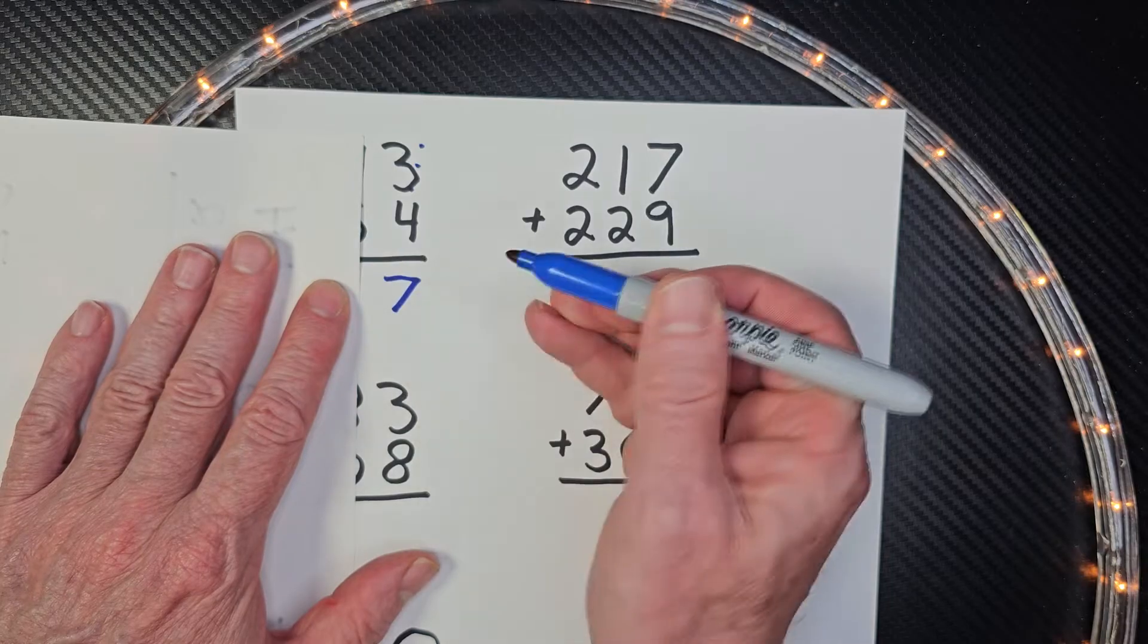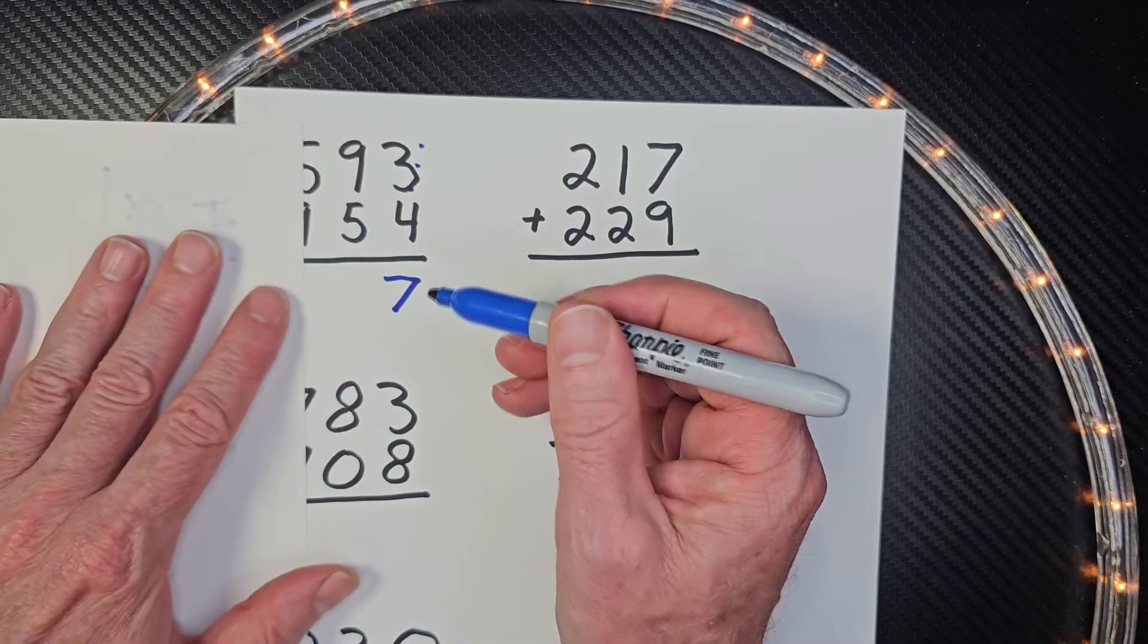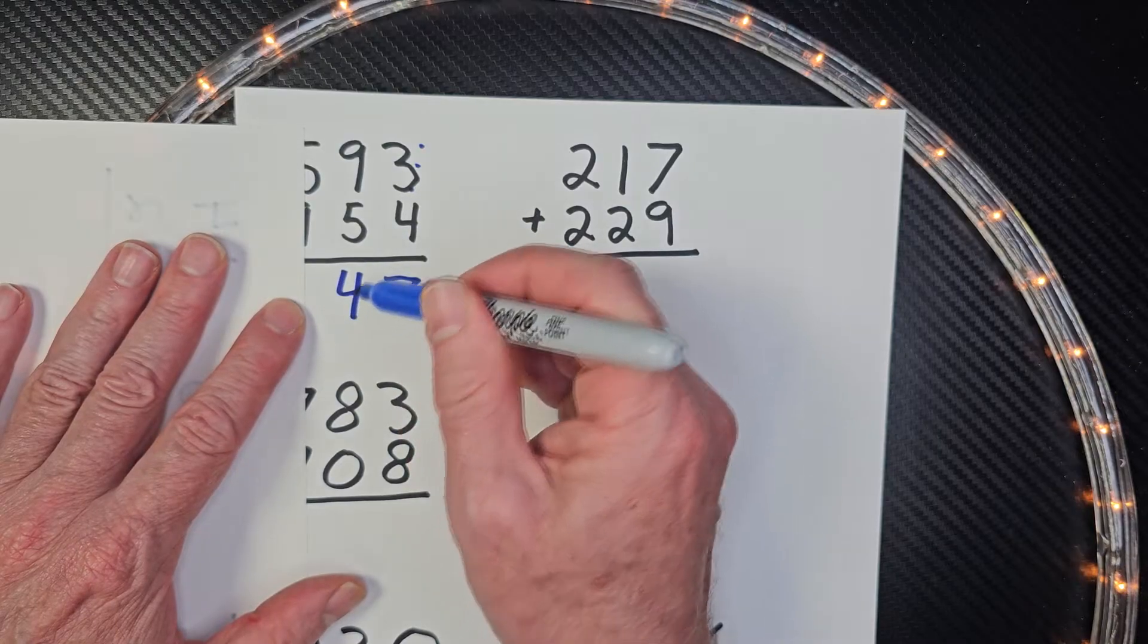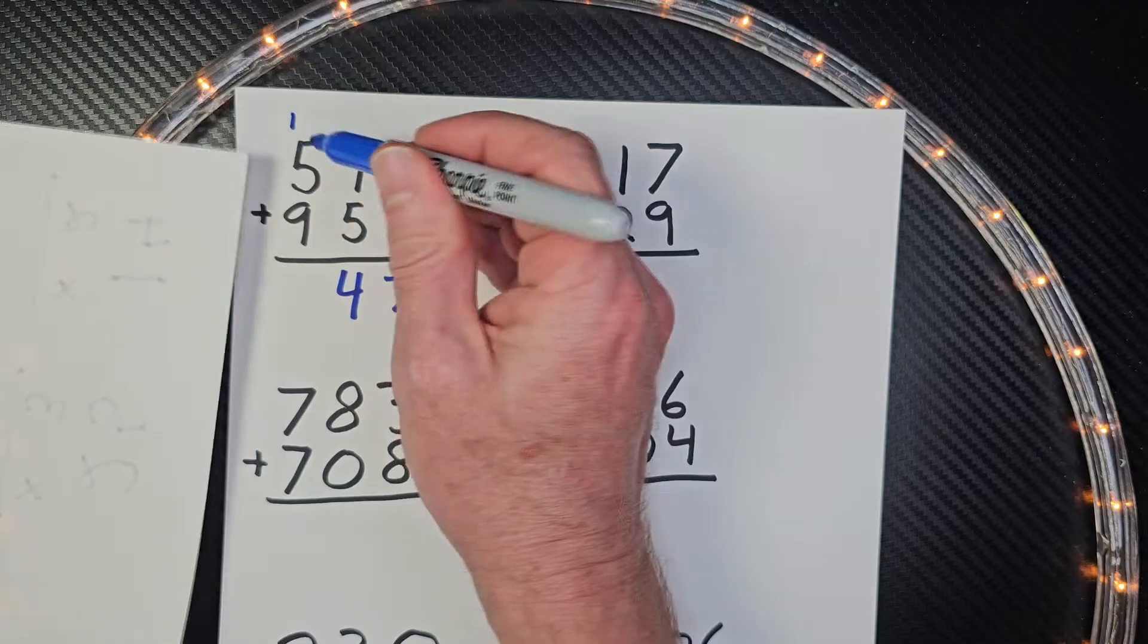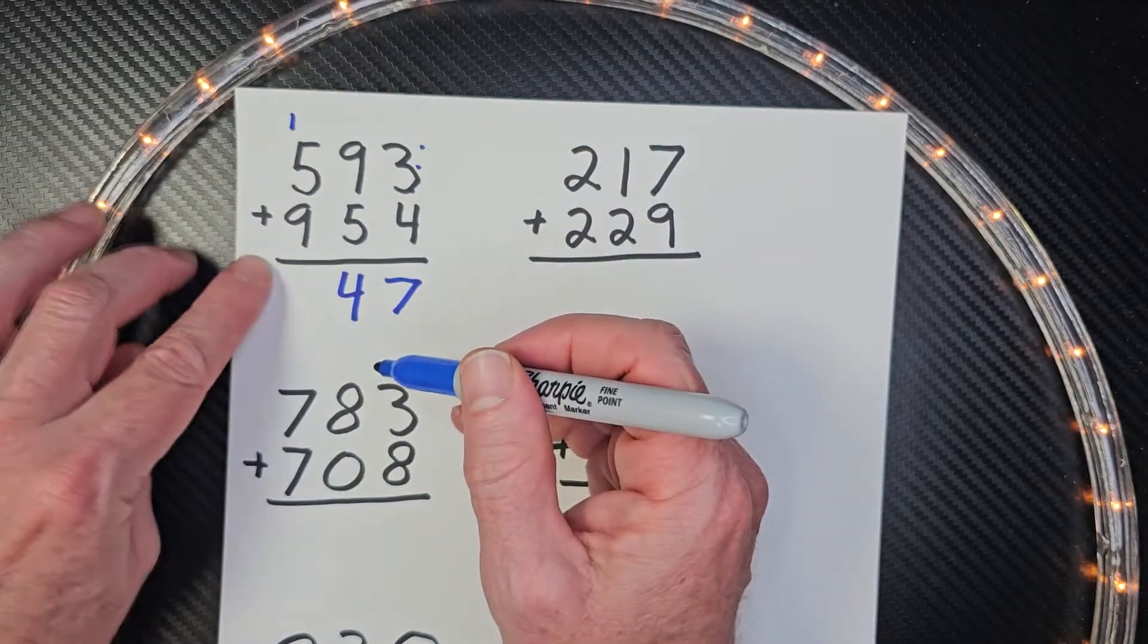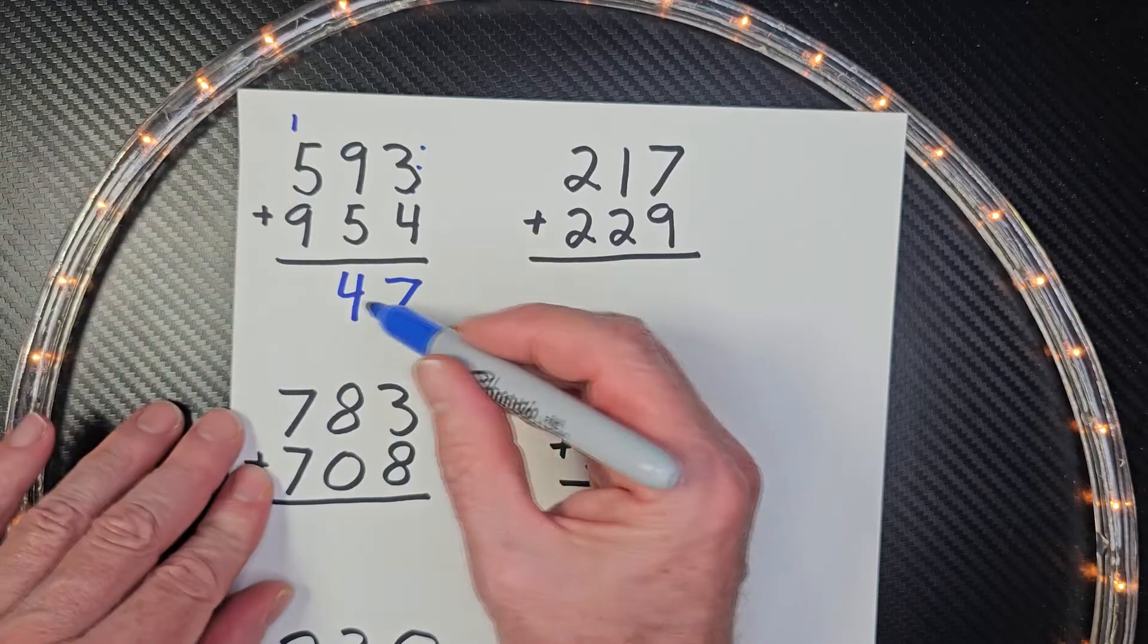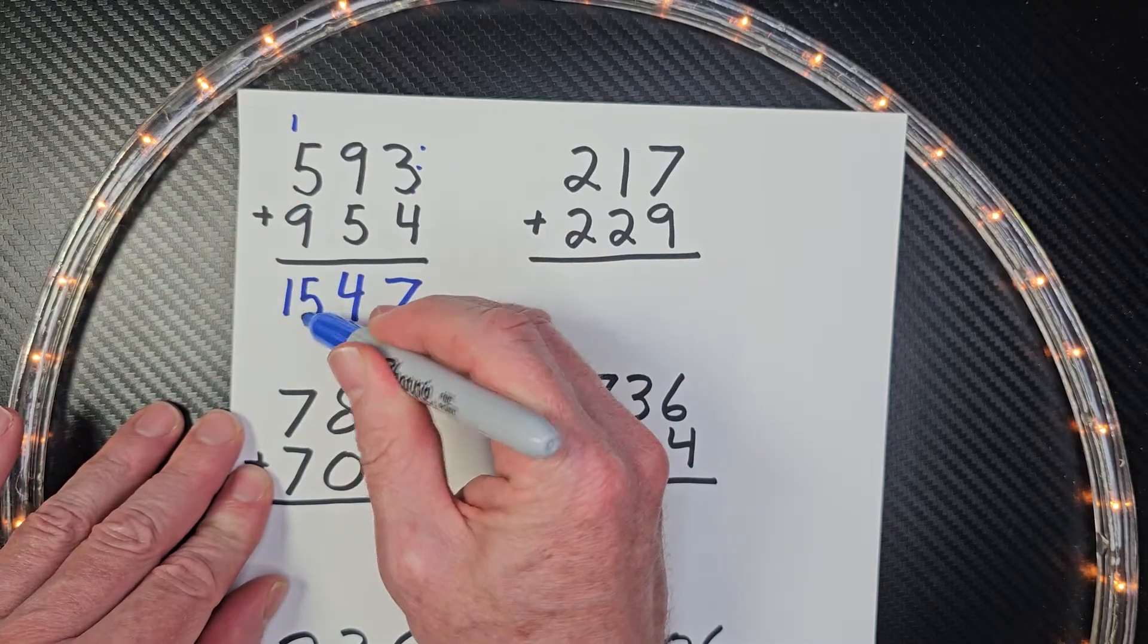So I put the seven right there, and then I move toward the tens. Nine plus five is 14. Carry the one, put the one right over here, and then I can go ahead and add the hundreds. Nine plus one is 10, plus the five would be 15.